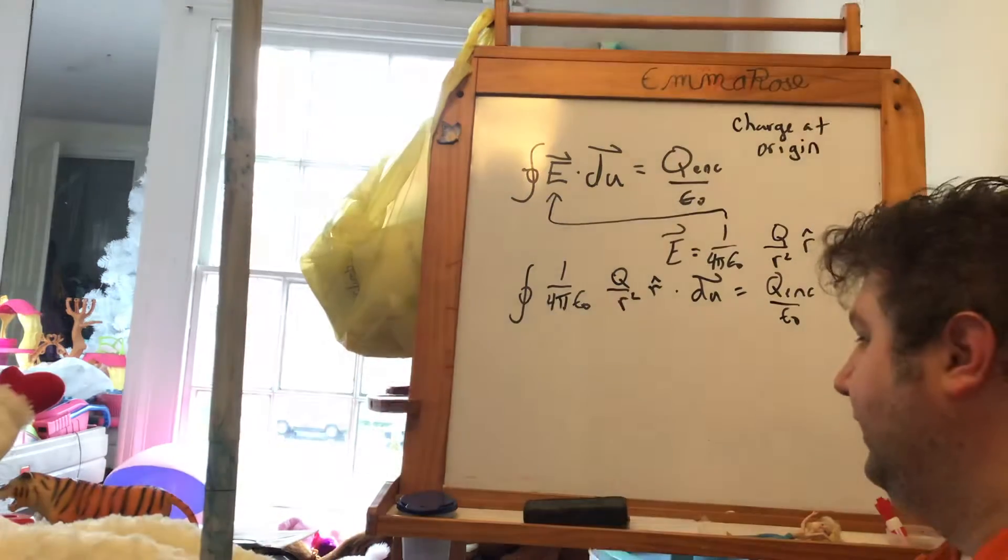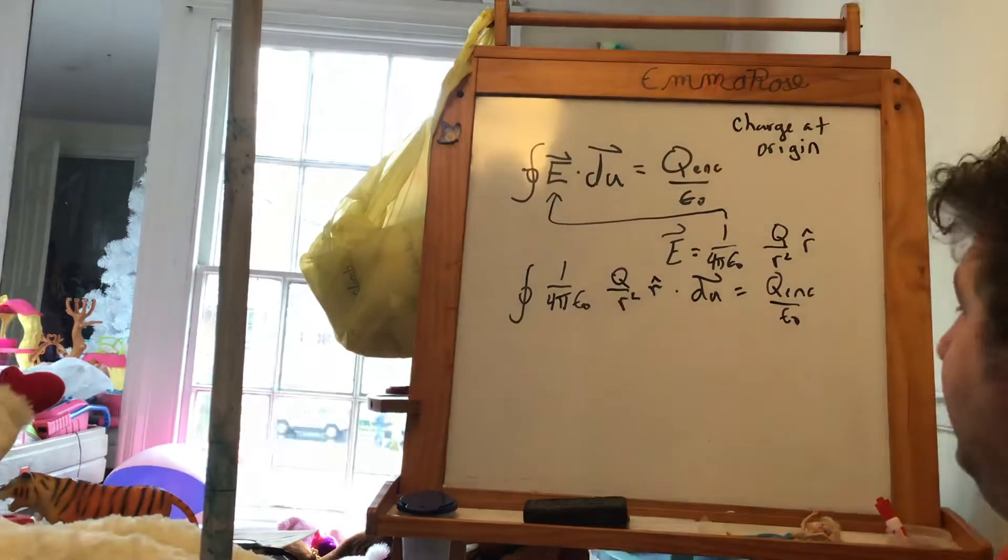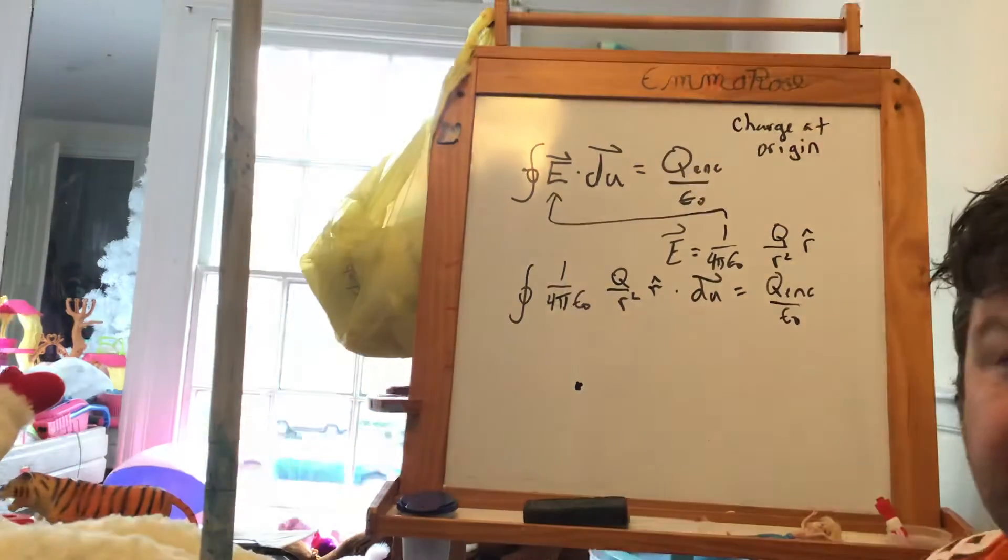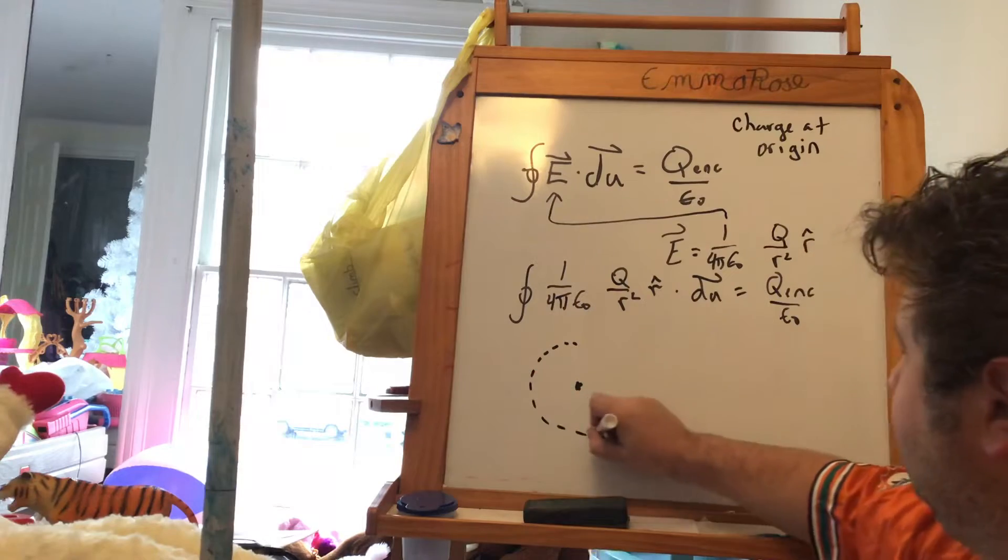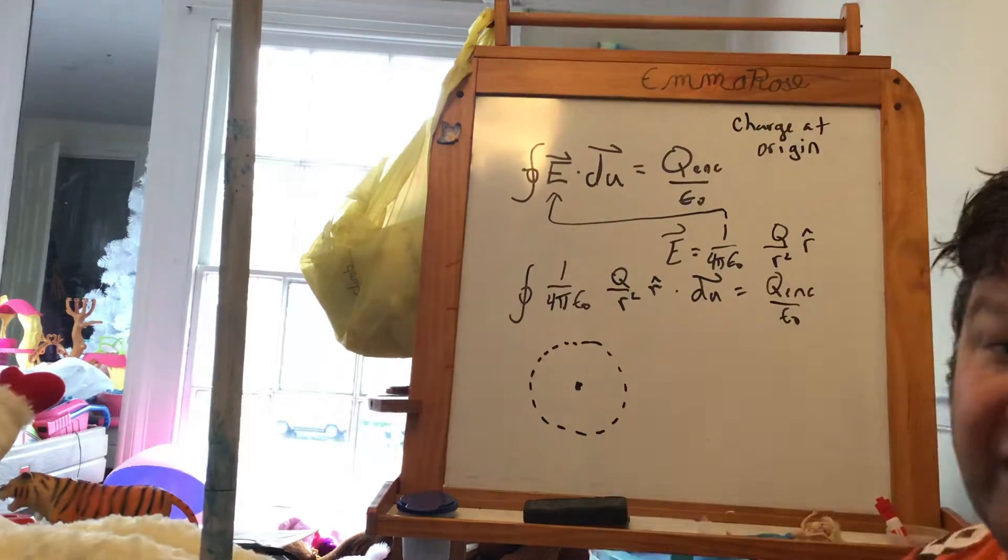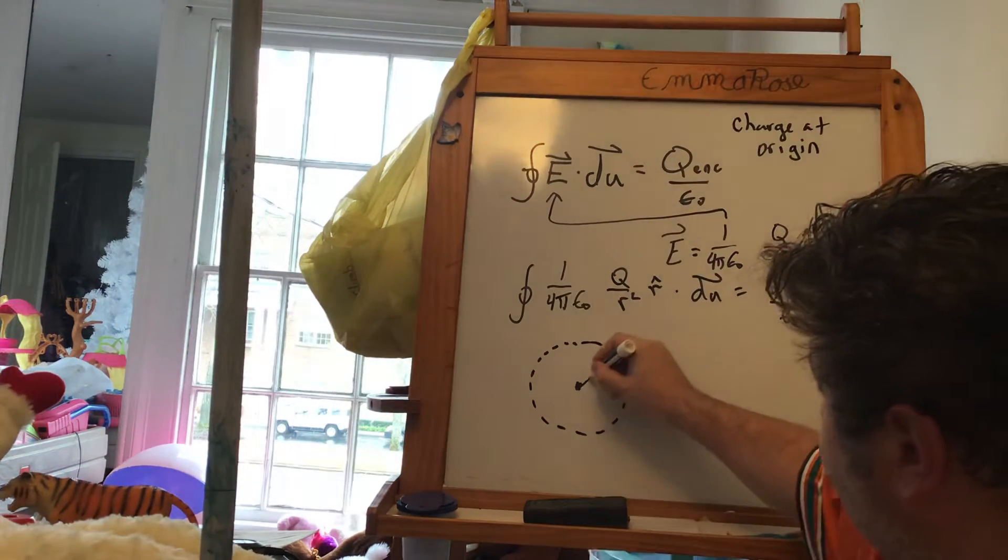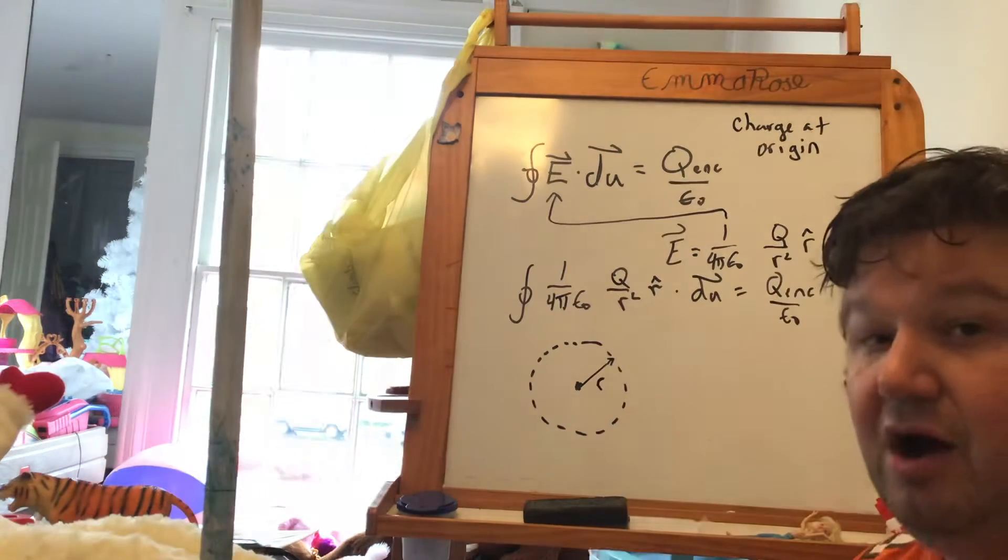The way we can think about this is that we have our charge right here, and we've drawn a Gaussian surface, which is a sphere around there, and that Gaussian surface has a radius of r.